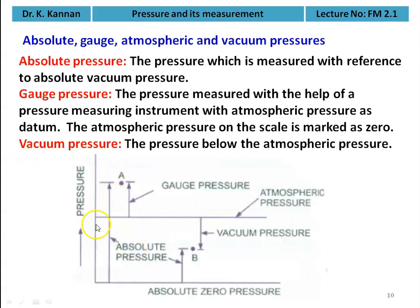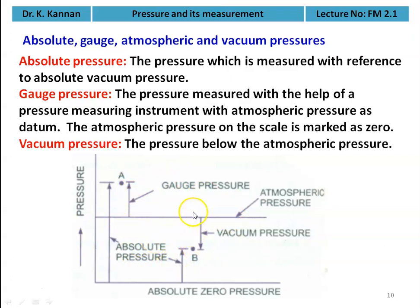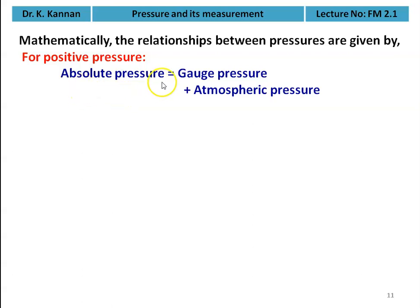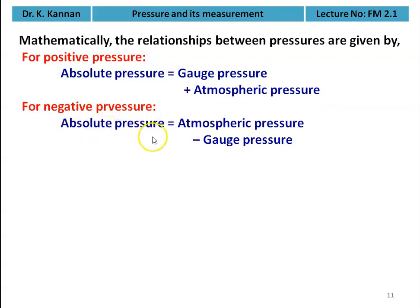Above the reference (atmospheric pressure) is positive pressure; below is negative or vacuum pressure. For positive pressure: absolute pressure = gauge pressure + atmospheric pressure. For negative (vacuum) pressure: absolute pressure = atmospheric pressure − gauge pressure. These two equations are very important in all calculations — in fluid mechanics, thermodynamics, thermal engineering, fluid machines, and gas dynamics.